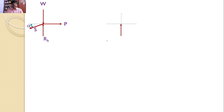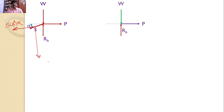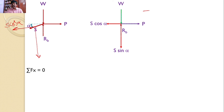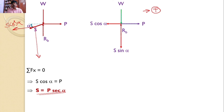Transferring all the forces: RB need not be resolved, force P need not be resolved, W need not be resolved. For S, the force makes an angle alpha with the horizontal, so the horizontal component becomes S cos alpha and the vertical component becomes S sin alpha. Applying the equilibrium condition sigma Fx equals zero: there are two forces along the x-axis, P and S cos alpha. Taking the positive direction, P equals S cos alpha, so S equals P sec alpha.